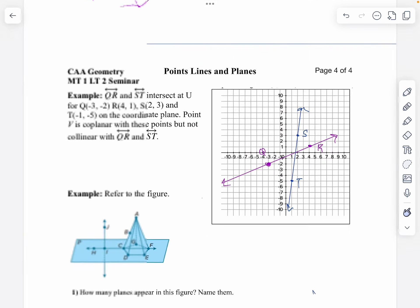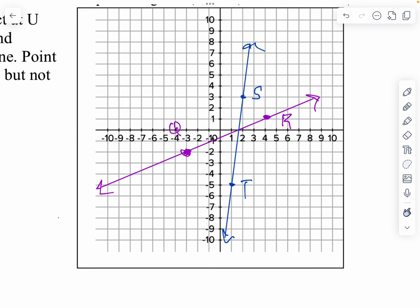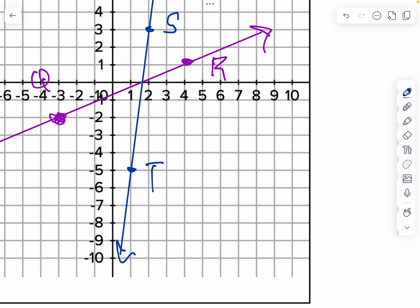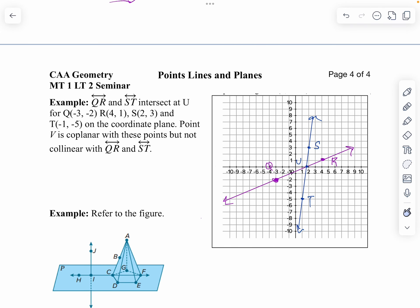And they intersect at point U. So where they cross, we're going to call that point U. Then it says we've got point V, which is coplanar, so it's in this graph. But it's not collinear with either one of my lines. So what I'll do is I will just point point V someplace out there, so it's not going to be on either line.